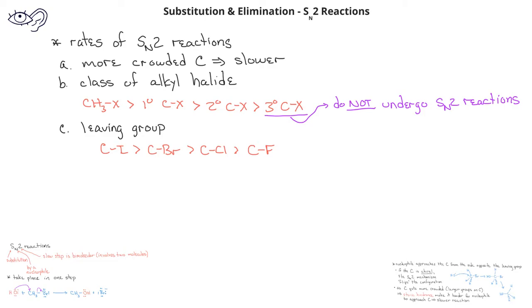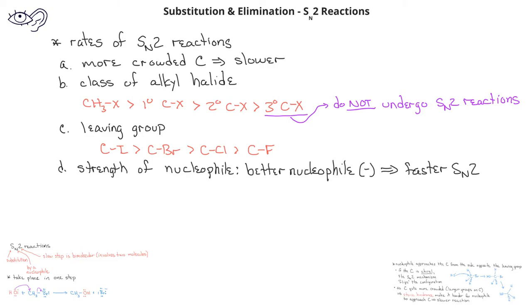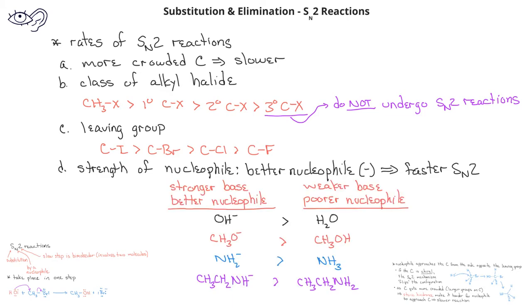The final thing that affects the rate of an SN2 reaction is the strength of the nucleophile. Essentially, the stronger the base is, the better the nucleophile it will be, and the faster the SN2 reaction will take place. In general, nucleophiles that have a negative charge will be stronger nucleophiles than those that are neutral. This table compares related nucleophiles. In each case, we see that the stronger nucleophile is the one with a negative charge: the hydroxide ion is a better nucleophile than water, the methoxide ion is a better nucleophile than methanol, and the amide ion (NH2⁻) is a better nucleophile than ammonia (NH3).